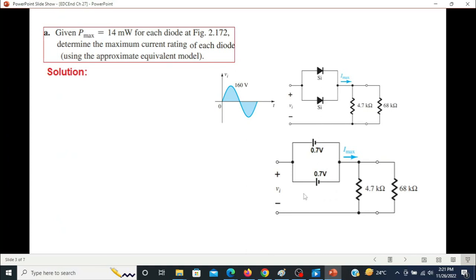We know this formula that power is V into I, and therefore current is P over V. So the current of each diode we can find: I diode maximum would be P diode maximum, the given power rating, divided by voltage, that is 0.7 volt across each diode. So 14 milliwatt divided by 0.7 will give 20 milliampere current.